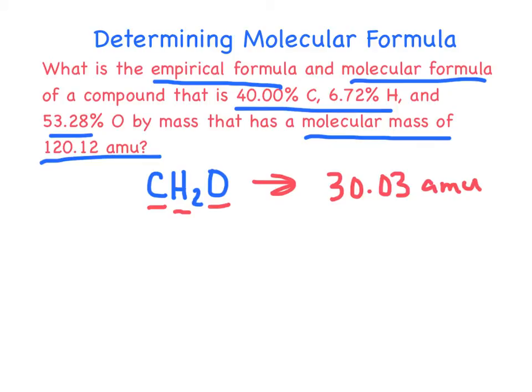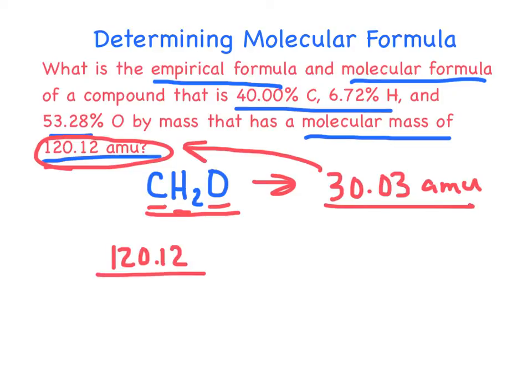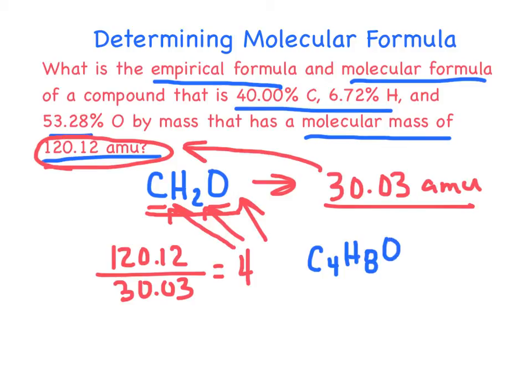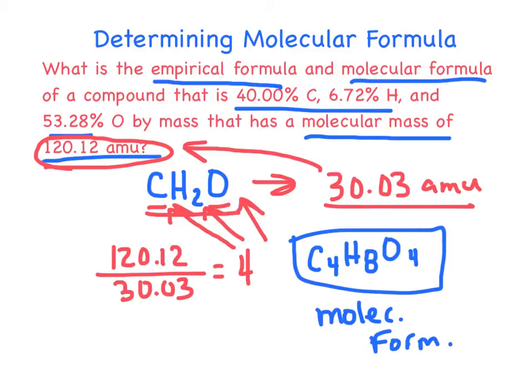But this says the molecular mass for this compound is 120.12 amu. So all we have to do is find out how many of these go into this. How many times does it go into that? So we do 120.12, that's the molecular mass, divided by the empirical formula mass, 30.03. And we find out that that is four times as much, which means that we have to do four times each one of these subscripts to get the molecular formula. So our molecular formula in this case is going to be C4H8, O4. Still the same ratio as the empirical formula, but it is the actual molecular formula.